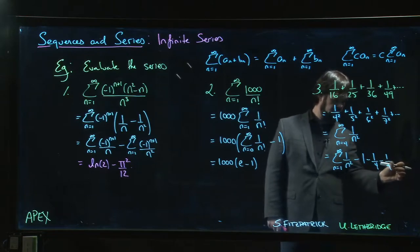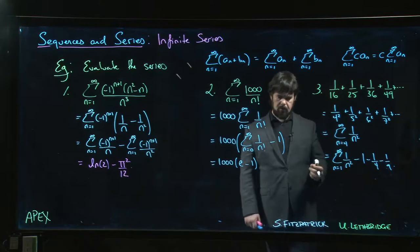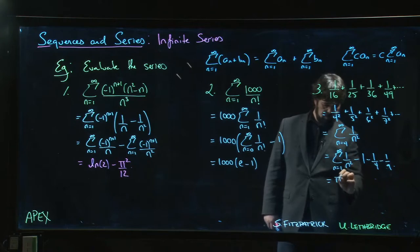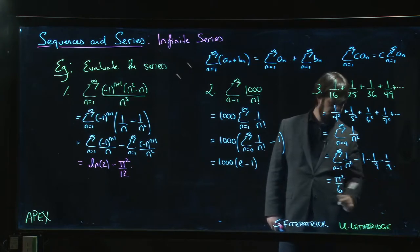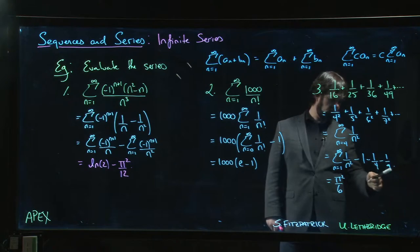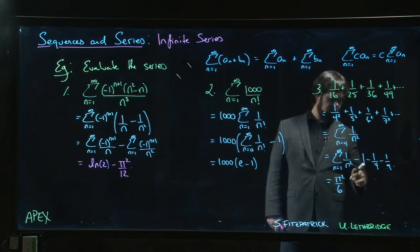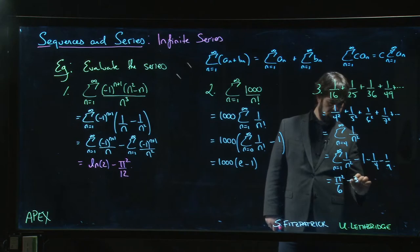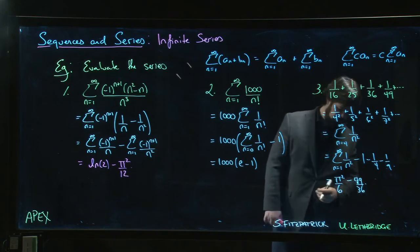And this sum of 1/n^2, that's the result we've mentioned already: this is π^2/6. And this here, let's get a common denominator of 36. 36 minus 9, let's add them: 36 + 9 is 45, plus 4 is 49. So π^2/6 - 49/36 for our answer.